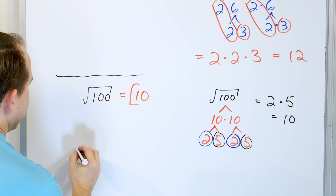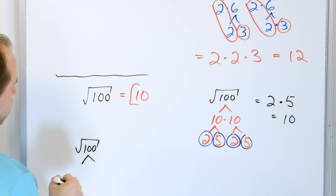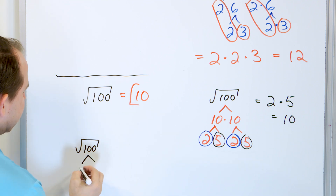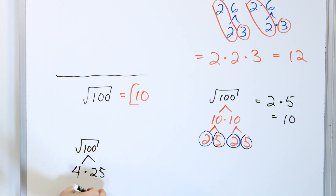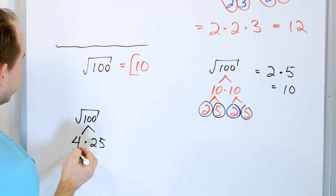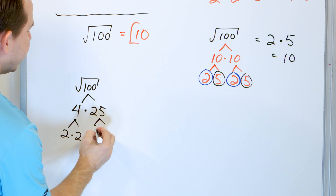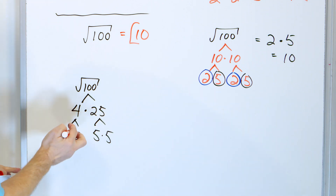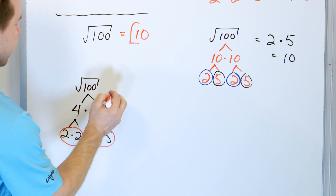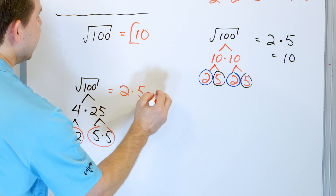Let's do the square root of 100 a different way. Instead of 10 times 10 or 2 times 50, let's do 4 times 25. It doesn't matter what you choose under this factor tree — you're going to get the right answer. So 4 can be written as 2 times 2, and 25 can be written as 5 times 5. You're looking for pairs: a pair of 2s and a pair of 5s. This comes out as a single 2, this comes out as a single 5, and again you get 10.